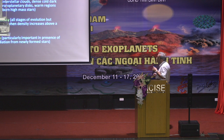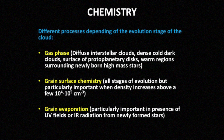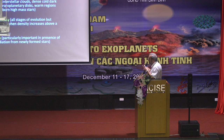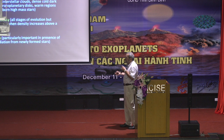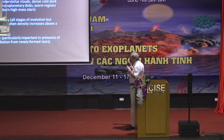We have gas phase reactions, grain surface chemistry, and grain evaporation when conditions allow the temperature of dust grains to increase. Gas phase chemistry dominates in diffuse interstellar clouds, dense cold dark clouds, the surface of protoplanetary disks, and warm regions surrounding newly formed high-mass stars. Grain surface chemistry dominates between the external layers of dark clouds and the regions where stars form. Grain evaporation occurs when a new star forms and its radiation increases temperature, or possibly also in shocks.